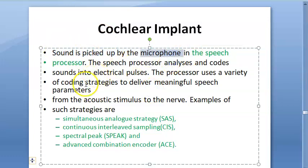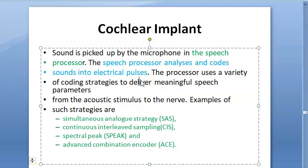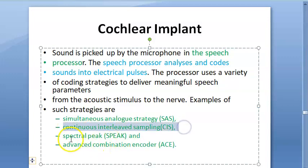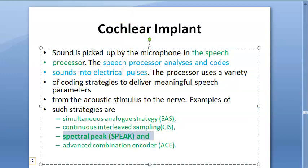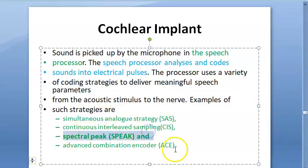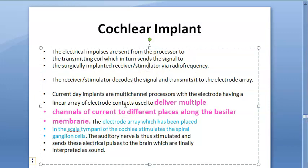Sound is picked up by the microphone in the sound processor. The speech processor analyzes and codes sound into electrical pulses. There are various coding strategies to deliver meaningful speech parameters: simultaneous analog strategy, continuous interleaved sampling, spectral peak - SPEAK. The spectral peak SPEAK strategy is one to remember. Also there is advanced combination encoder - ACE. The SPEAK strategy converts sound into electrical signal.